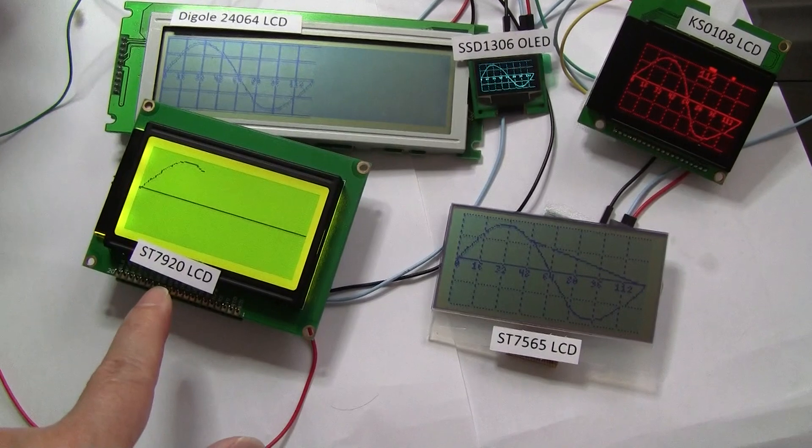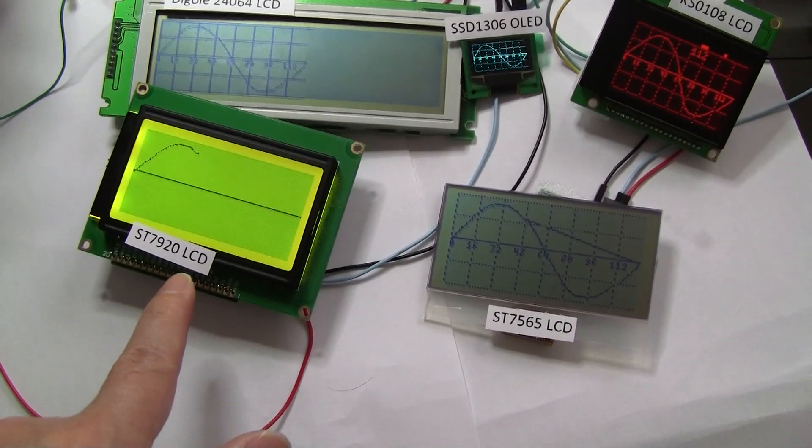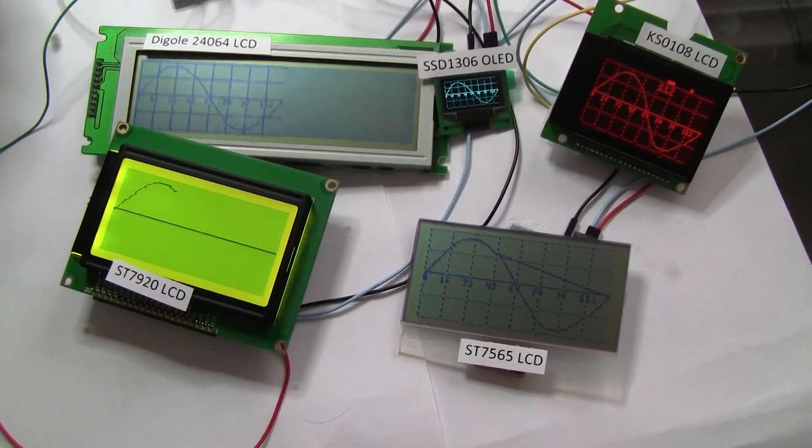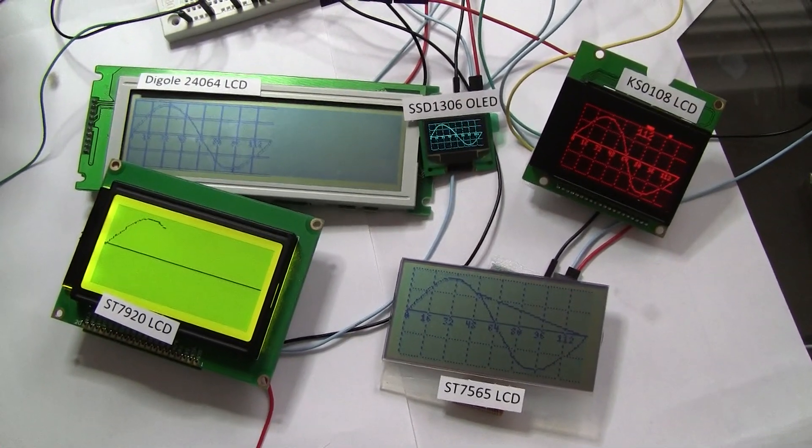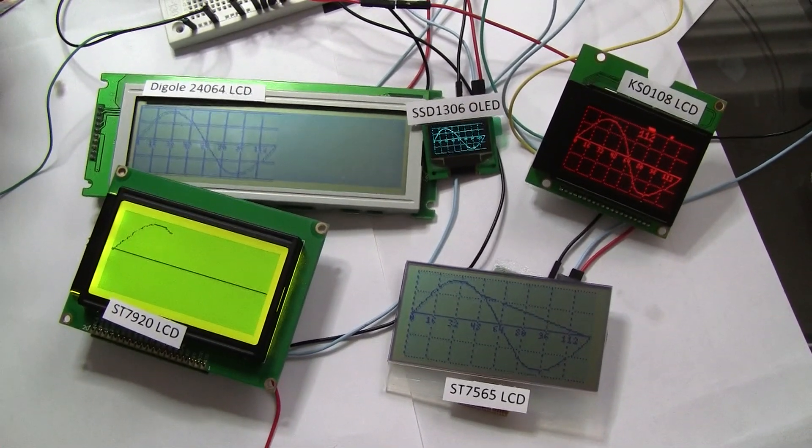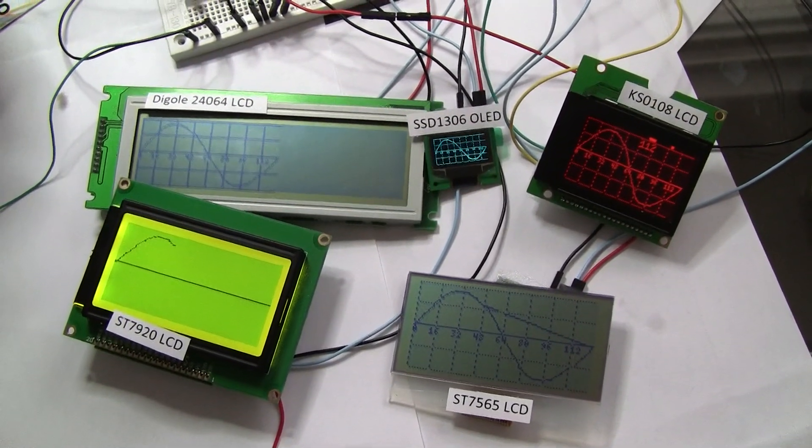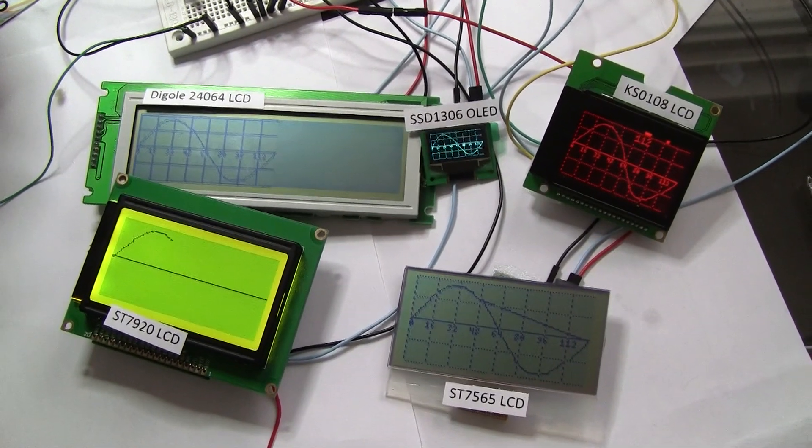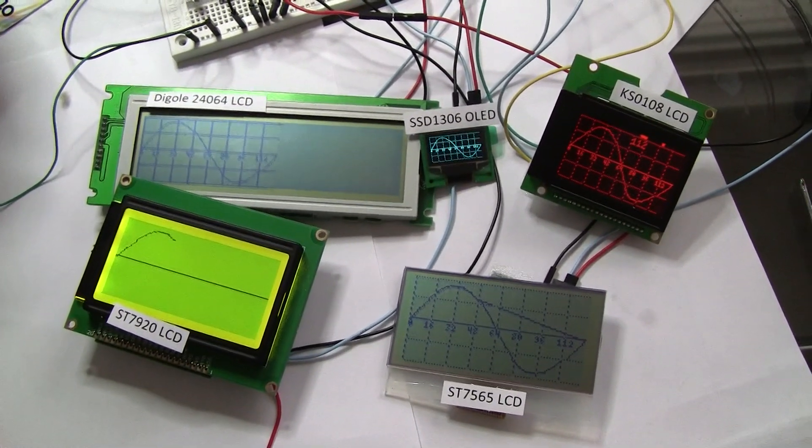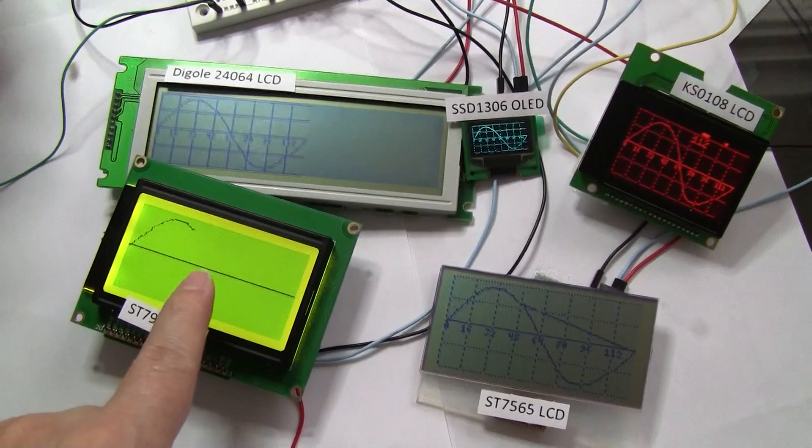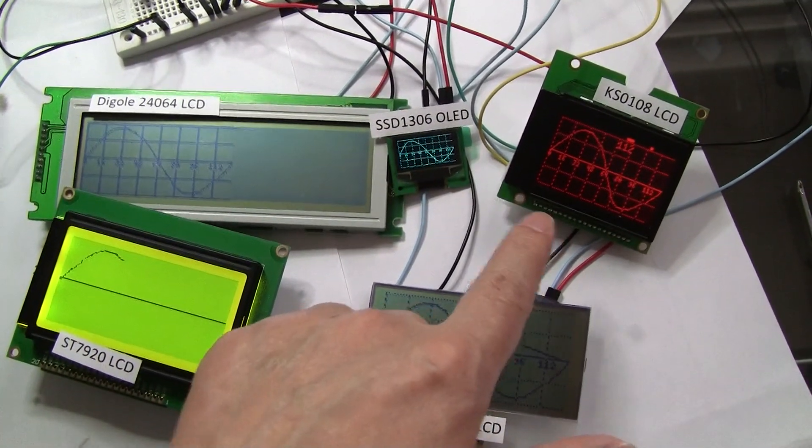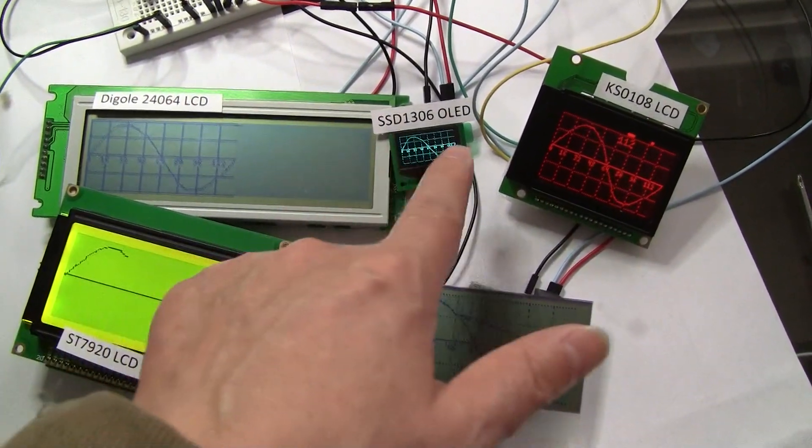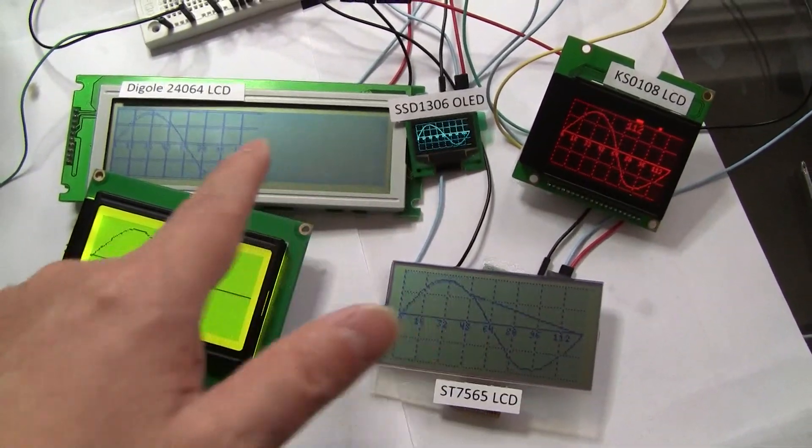The slowest one is equipped with ST7920. So if you want to flash the screen faster, don't use this kind of display. This one may be good. This one may be good. But these two are the best choice for you.